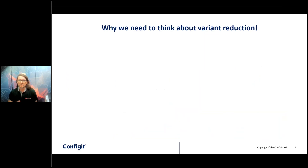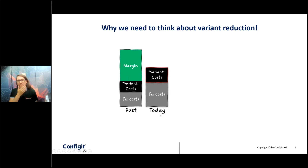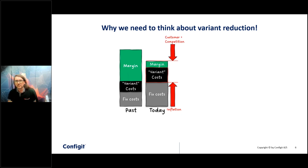If we look into variant management, why do we have to think about reducing it? In the past you had some fixed costs — factories, machines, people — and some variant costs clearly related to the different variants you offer, and a nice margin. Today, fixed costs are increasing due to inflation, and from the other side there is pressure from customers who want to buy cheaper, plus new cheaper competitors. In between, we have also increased variant complexity, adding more and more variants.